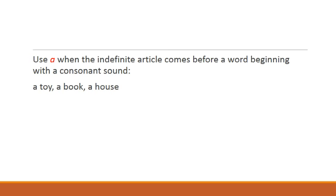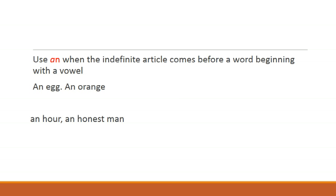And use the article AN when a word is beginning with a vowel sound. For example: an egg, an orange, an umbrella, an elephant.